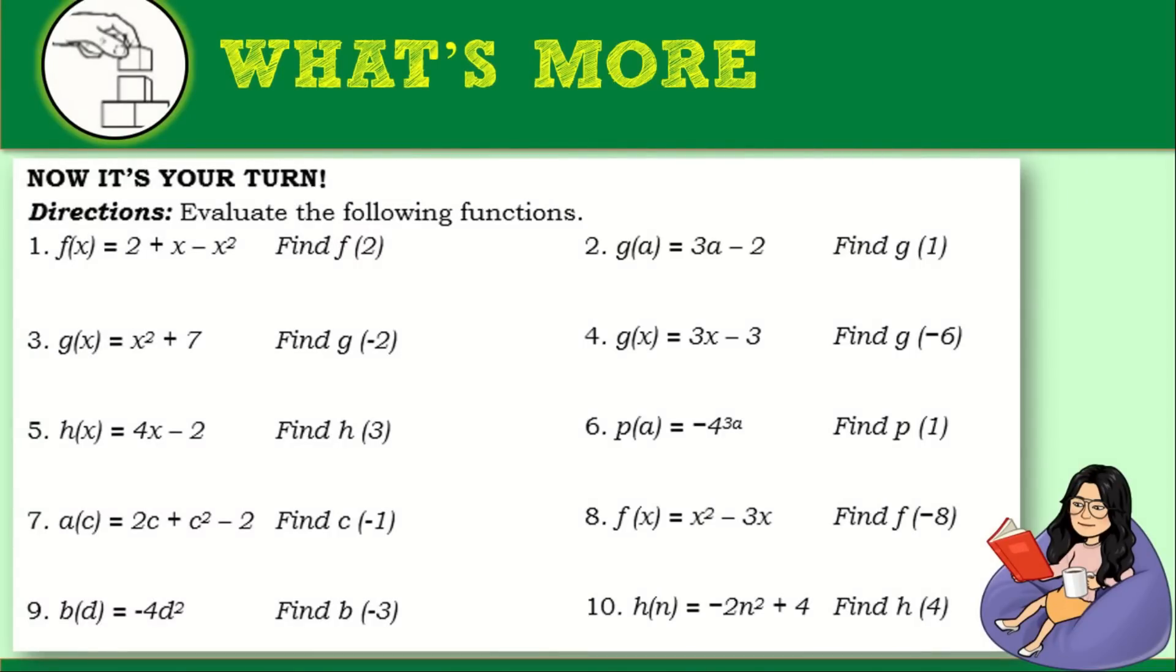What's more? Now it's your turn. I prepared a 10-item assessment for you to check if you fully understand our lesson. Evaluate the following functions. For example, number 1: f of x is equal to 2 plus x minus x squared, find f of 2. Remember, f of 2 means you are going to evaluate the given function at x is equal to 2. You can pause the video and copy the given in your mathematics notebook, or screenshot this and answer it on your available time.